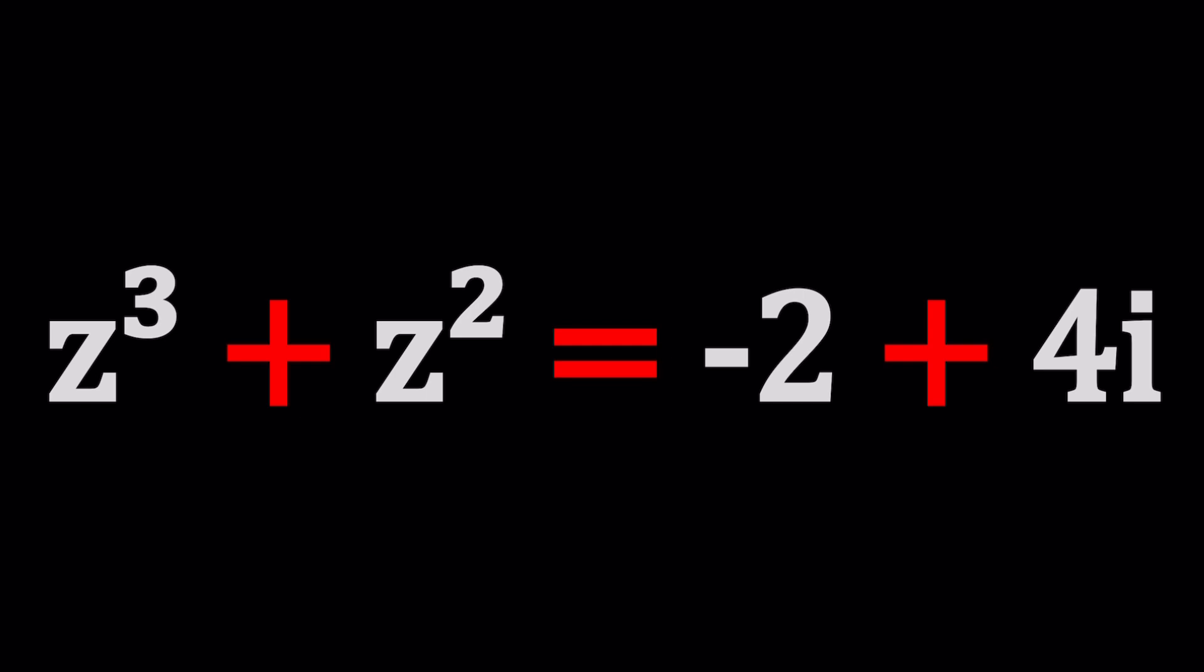So we have z cubed plus z squared equals negative two plus four i. We're going to solve for z. What is z? Z is a complex number. What is a complex number? A complex number is a plus bi.